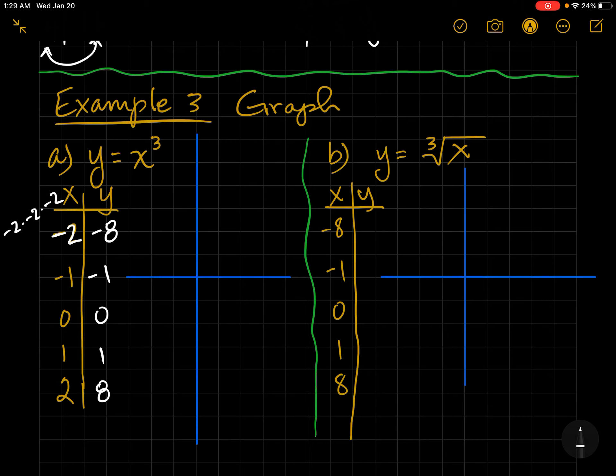Now, if we plot these points, negative two goes to negative eight. Two, four, six, eight. Negative one is negative one. Zero, one, over two, two, four, six, eight goes way up here. Here, and this is our parent function, and this is what y equals x cubed looks like.